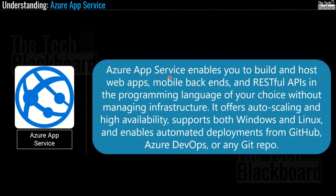As per Microsoft, Azure App Service enables you to build and host web apps, mobile backends and RESTful APIs in a programming language of your choice without managing the infrastructure. It offers auto scaling and high availability, supports both Windows and Linux, and enables automatic deployments from GitHub, Azure DevOps or any other Git repo. Basically, Azure App Service lets you quickly build, deploy and scale enterprise-grade web, mobile and API apps running on any platform — it is a fully managed platform to meet rigorous performance, scalability, security and compliance requirements.